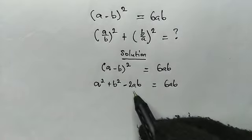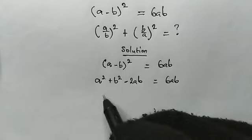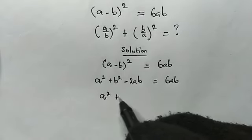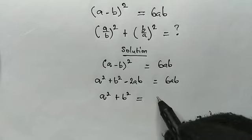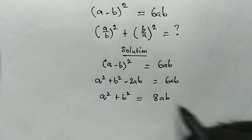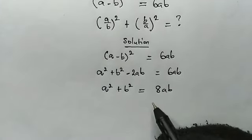Add 2ab to both sides. We get a² + b² is equal to 6ab plus 2ab, which gives us 8ab. At this point, let us divide both sides by ab.